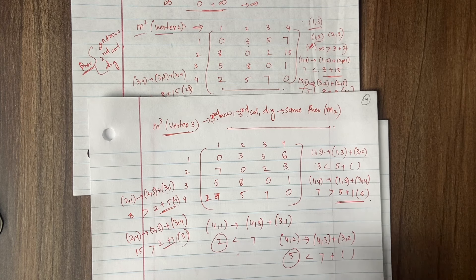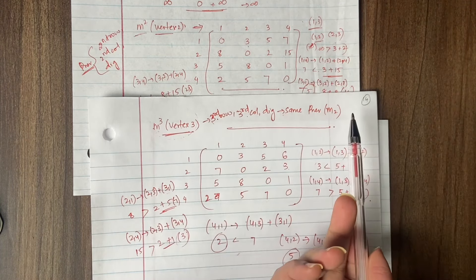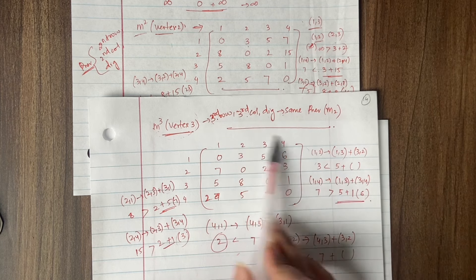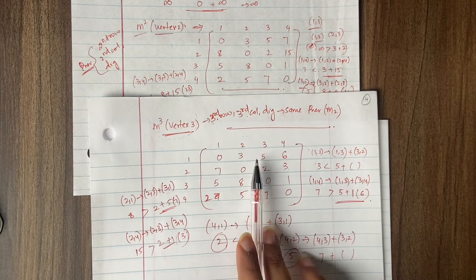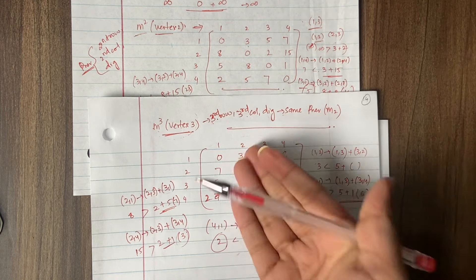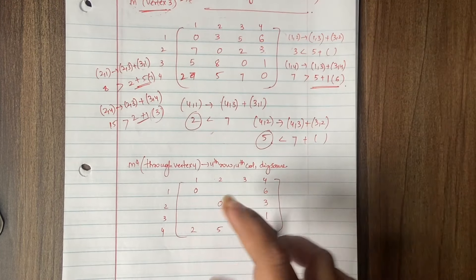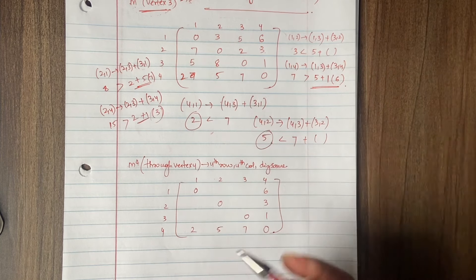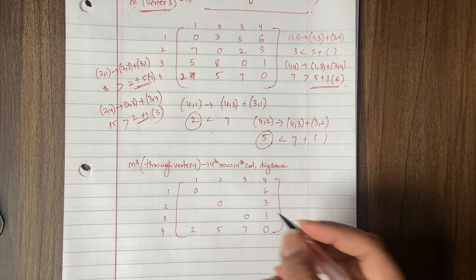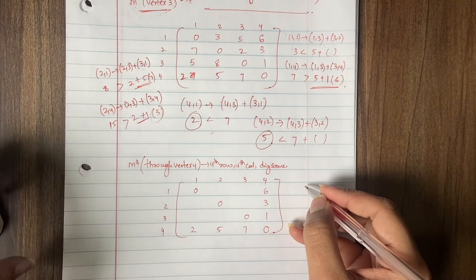The last step is to find the M4 matrix — through vertex 4. For that matrix, the fourth row, fourth column, and diagonal are copied from M3, and the remaining values must be found. Let us copy those and now find the missing values. First is position (1,2).